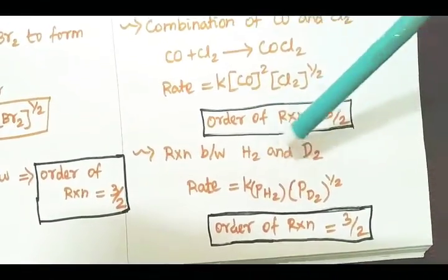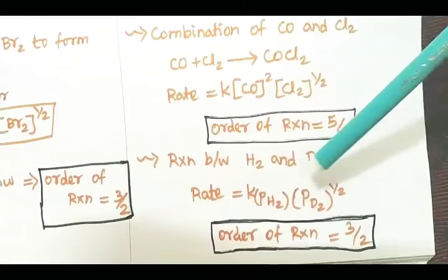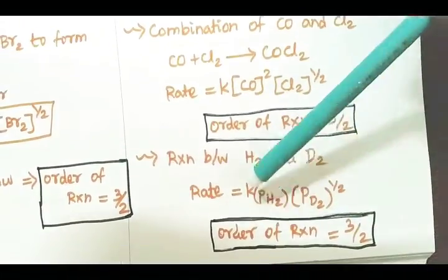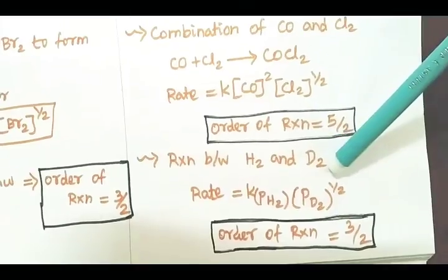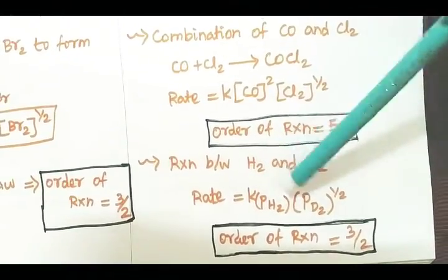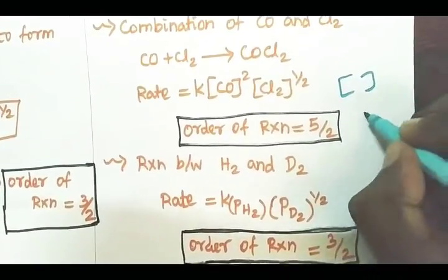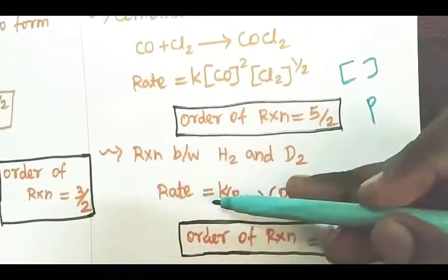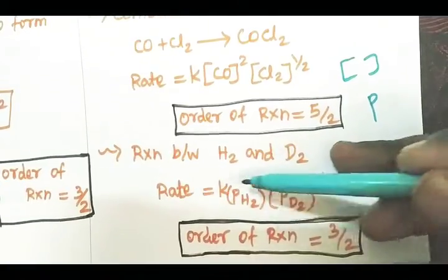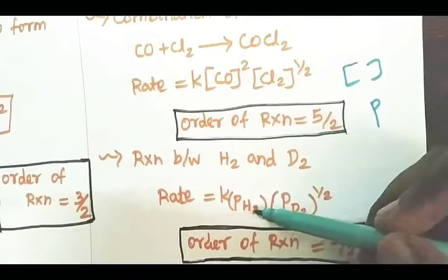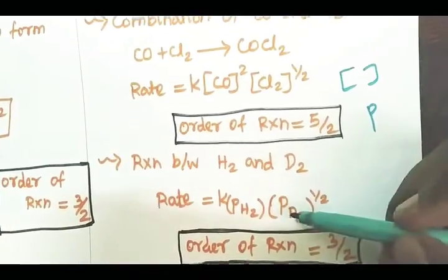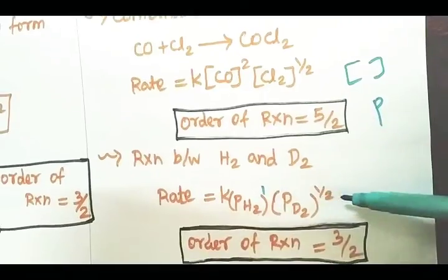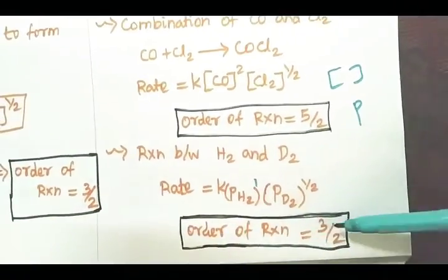The reaction between hydrogen and deuterium uses the partial pressure term in the concentration expression. Rate = k × P(H₂) × P(D₂)^(1/2). With respect to deuterium, the order is 1/2; with respect to hydrogen, the order is 1. Overall, the reaction order is 1 plus 1/2, which equals 3/2.